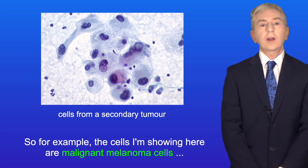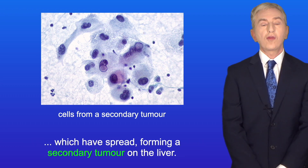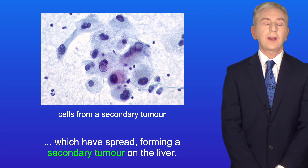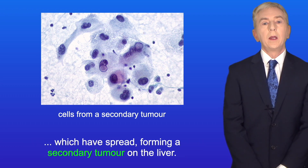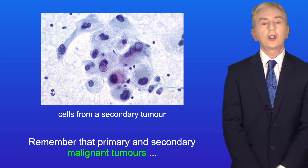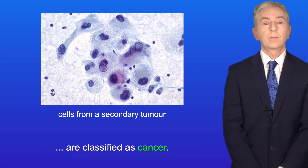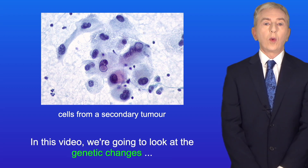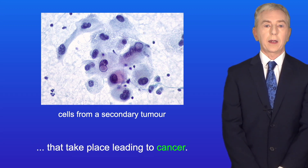For example, the cells shown here are malignant melanoma cells which have spread, forming a secondary tumour on the liver. Remember that primary and secondary malignant tumours are classified as cancer. So in this video, we're going to look at the genetic changes that take place leading to cancer.